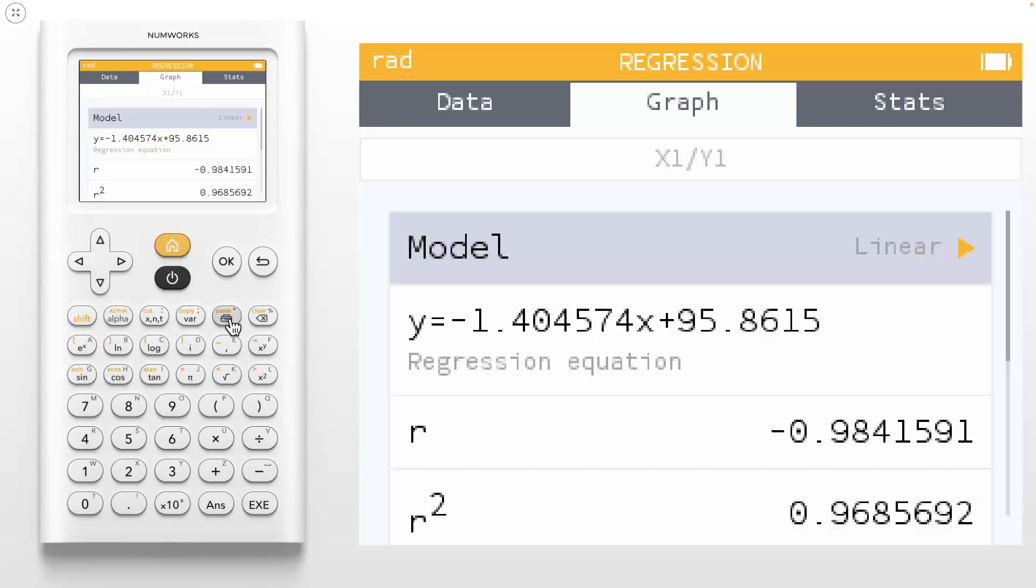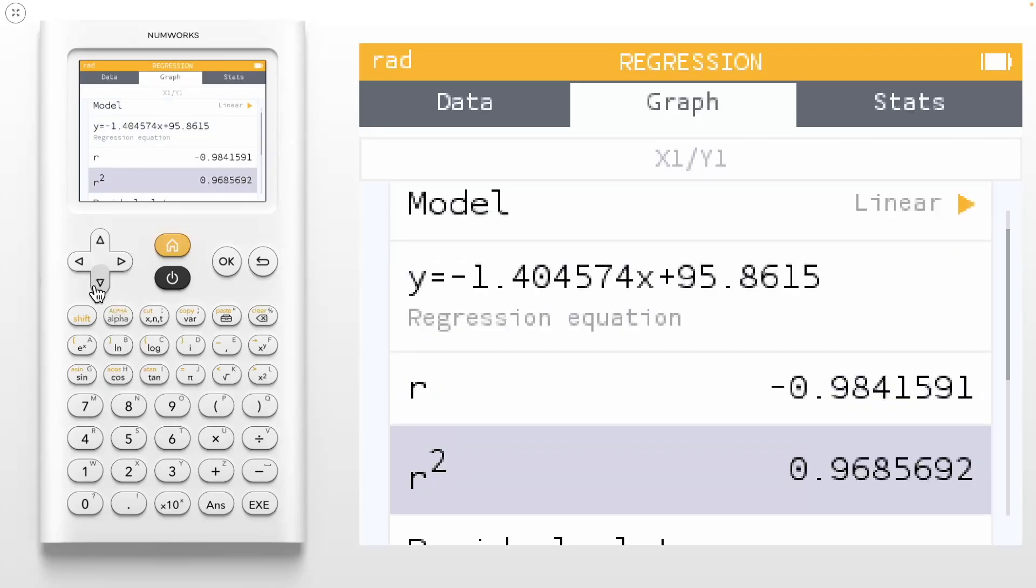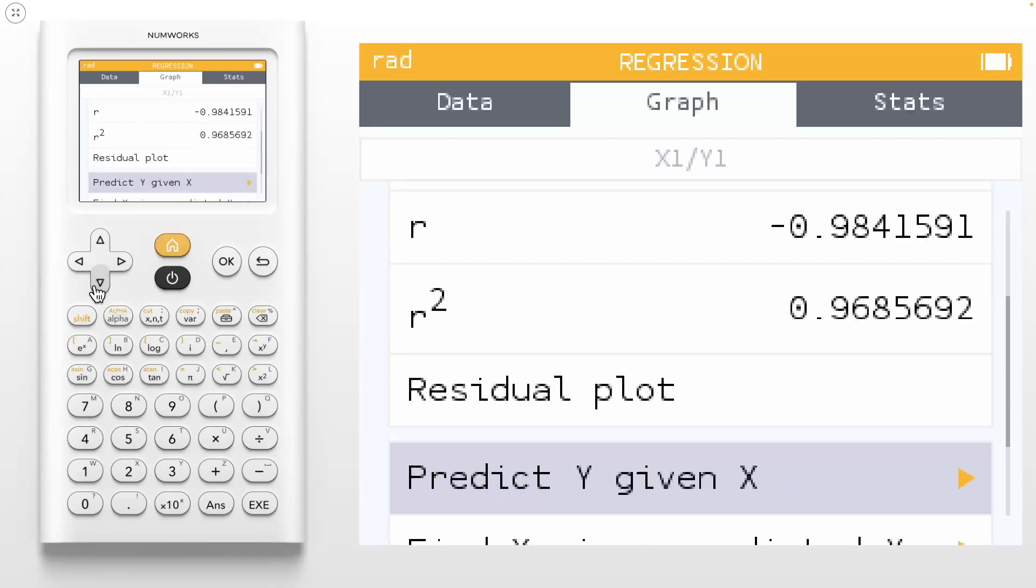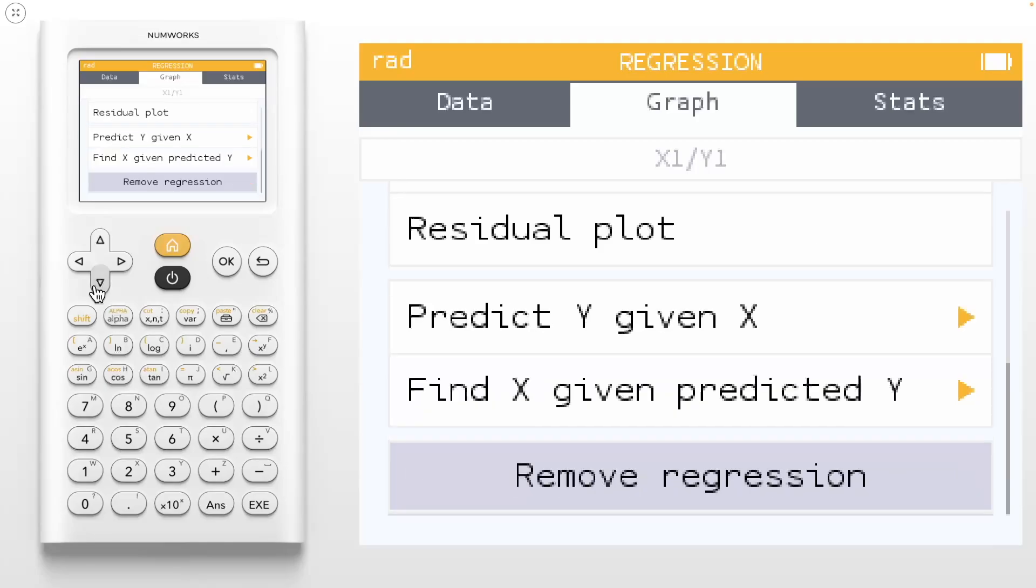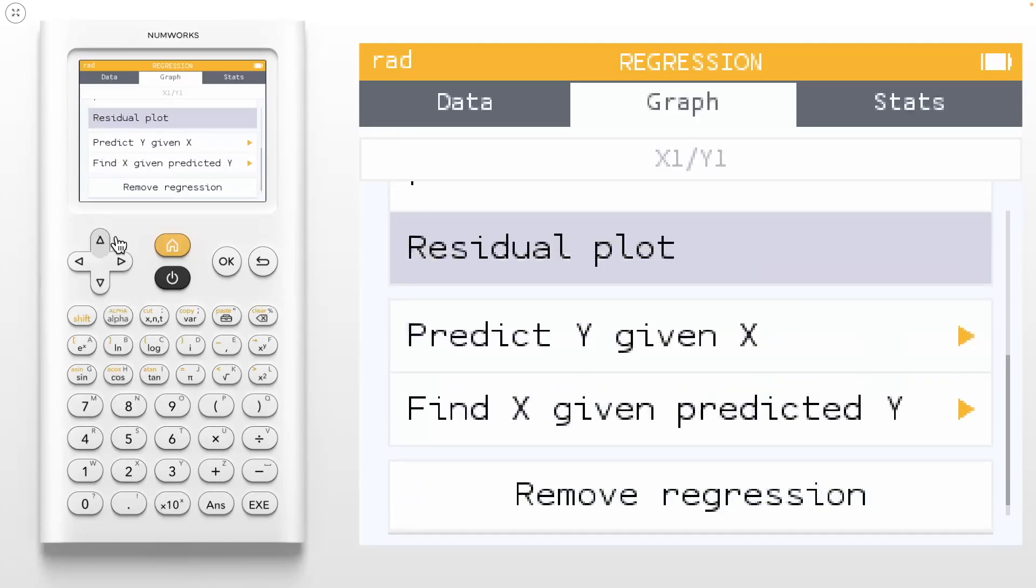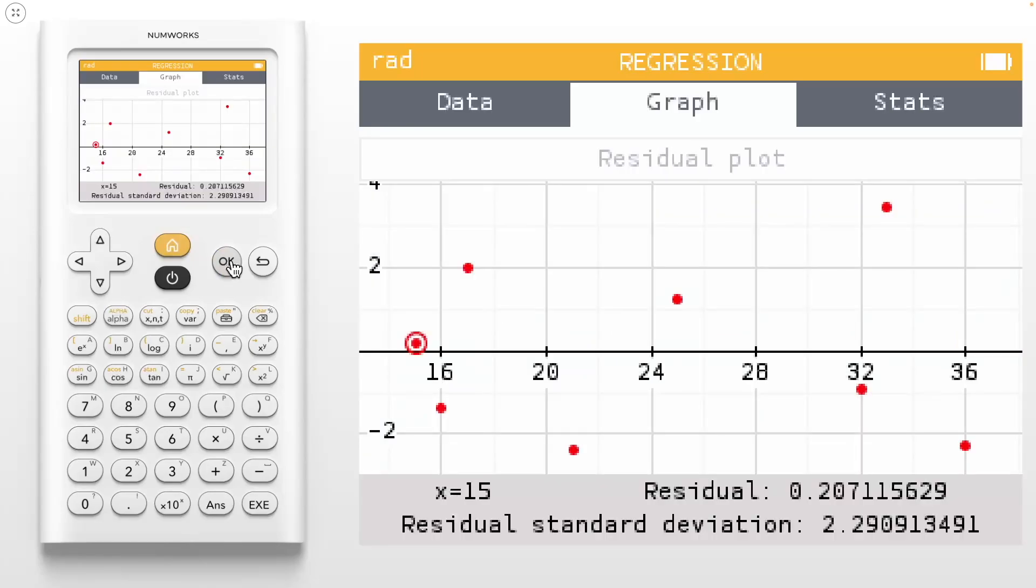Use the toolbox key to jump back into the regression menu. Here you can change your regression model, see regression equation, correlation, create a residual plot, and you can determine predicted values using the regression menu. Let's look at our residuals to determine if this model is the best fit for our data. Since we have a pretty random looking residual plot, we know our linear model is our best model.